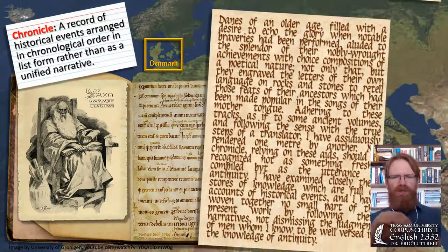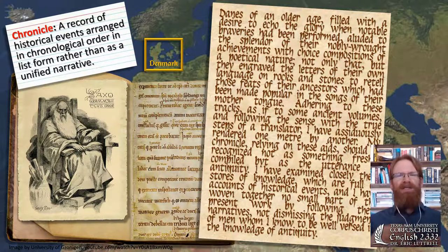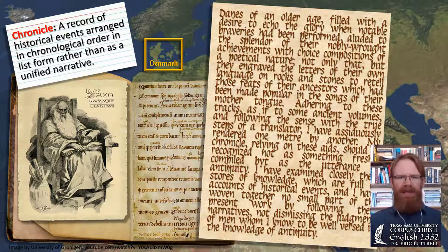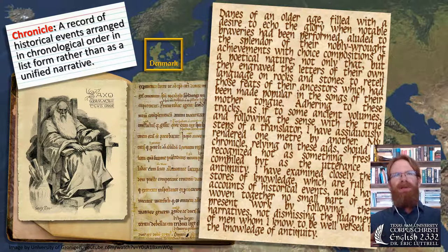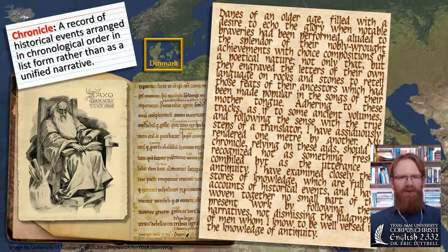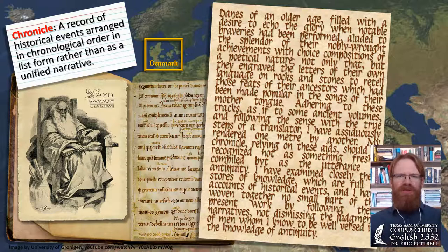But Saxo is not just trying to write a list like the Anglo-Saxon Chronicle — he is trying to make this into a story. He admits he's taking sources from all over, including oral tradition, and even mentions runic inscriptions. He says the Danes engraved letters of their own language on rocks and stones to retell the feats of their ancestors made popular in songs of their mother tongue. These are the sources Saxo pulls together and puts into this larger chronicle.